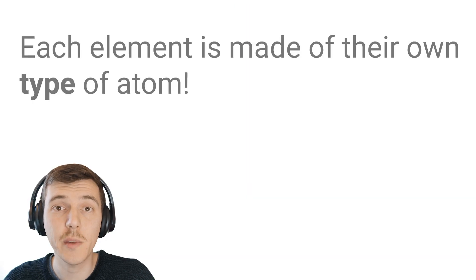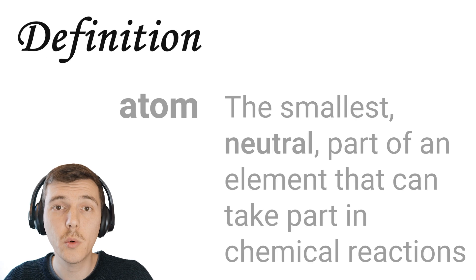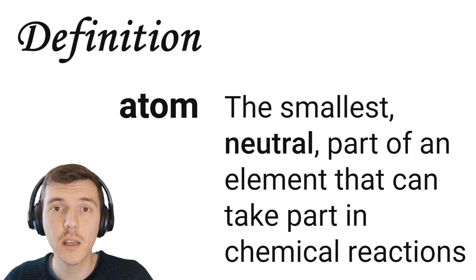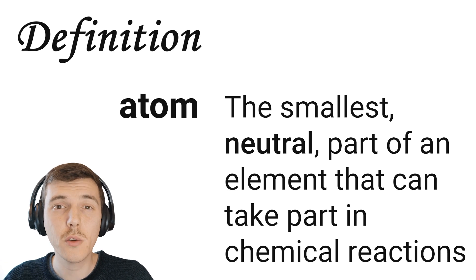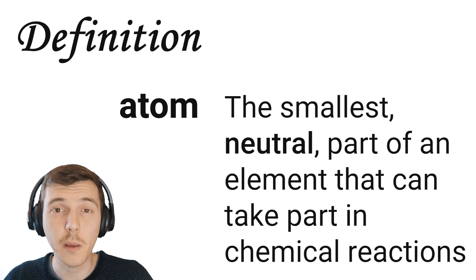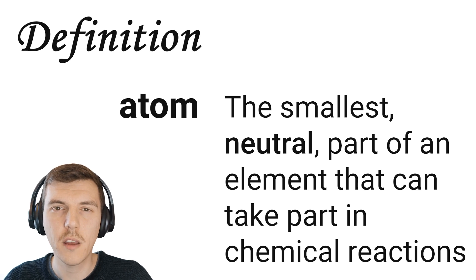What makes each element different is that they're made up of their own type of atom. An atom is the smallest part of an element that can exist. And that's not technically the whole truth, because later on in this video, we're going to learn about subatomic particles - particles smaller than an atom. But I'll leave that for later.